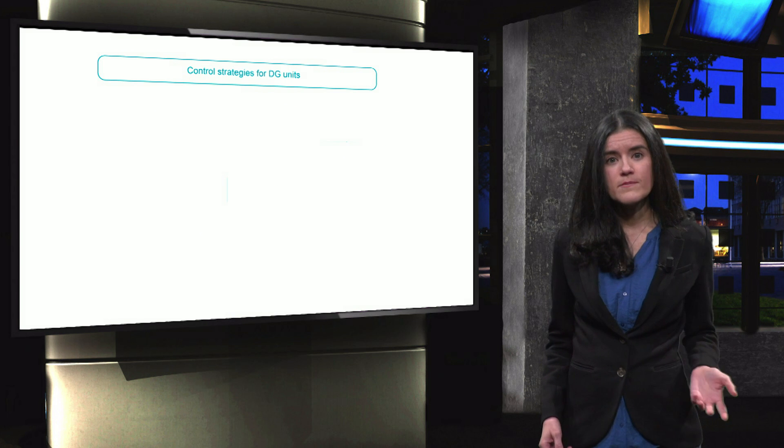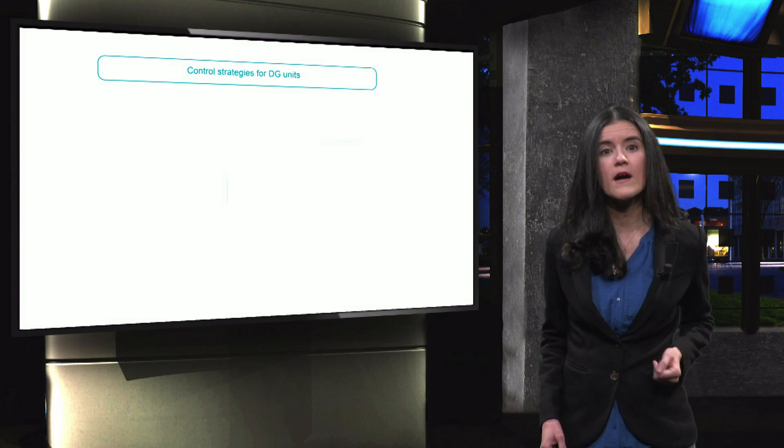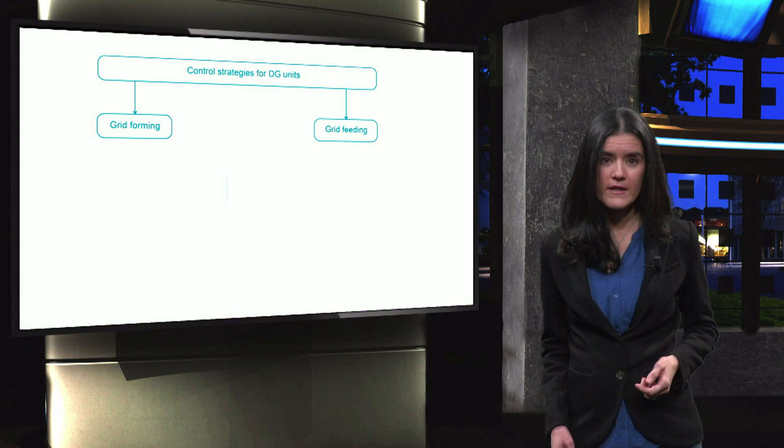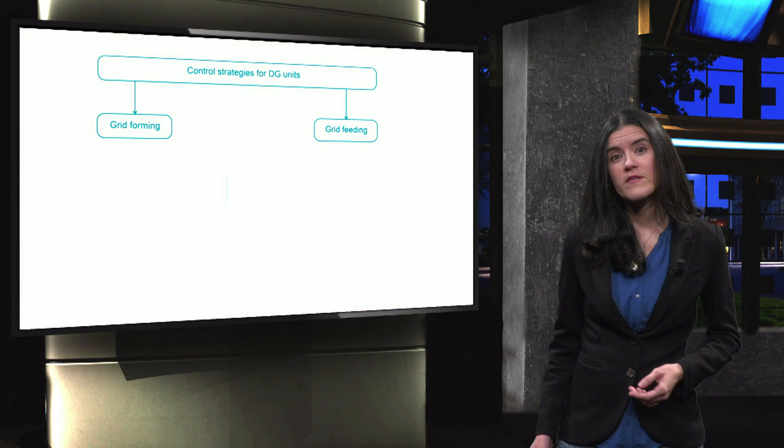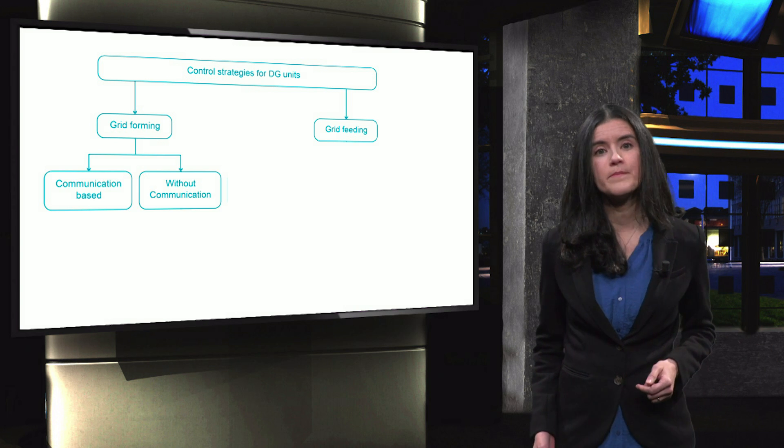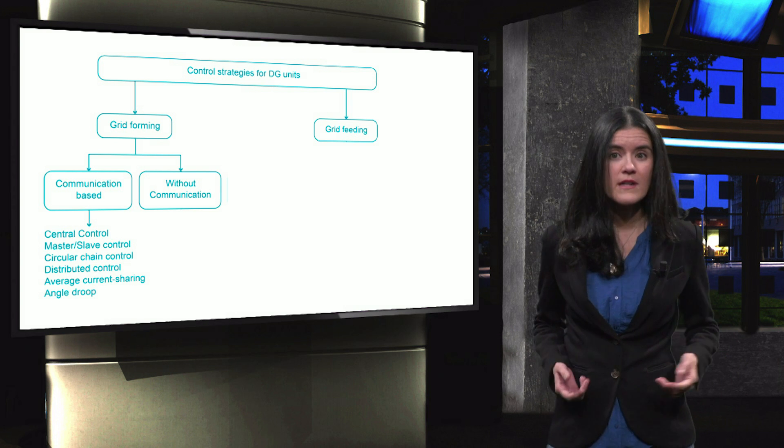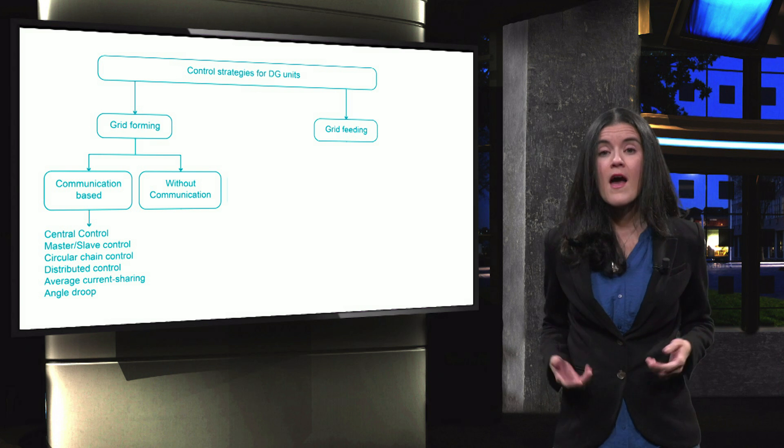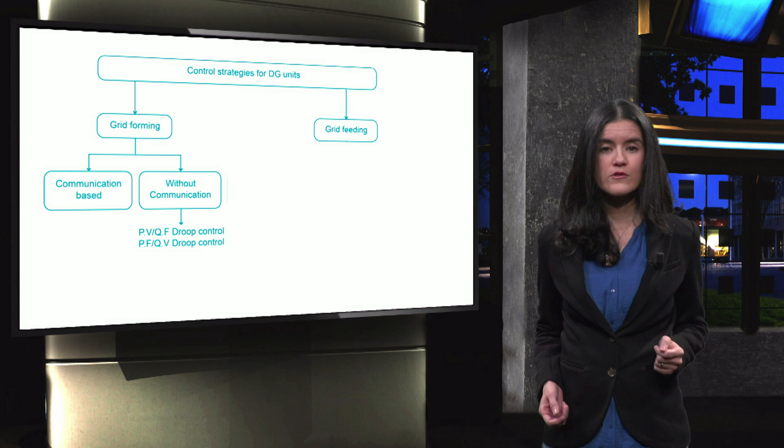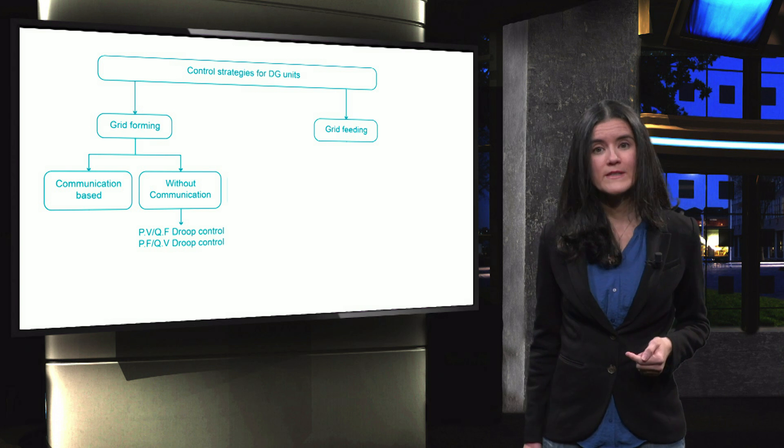Various control strategies are adopted to create a microgrid. It is possible to identify two types of distributed generation control, grid forming and grid feeding. Grid forming types fall into two groups, communication-based and non-communication-based control schemes. Among communication-based control strategies, master-slave control is widely known, and it is an alternative to droop control. Droop control is a non-communication-based control strategy. In the next video, we will see droop strategies in more detail.